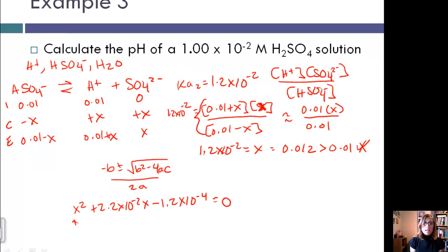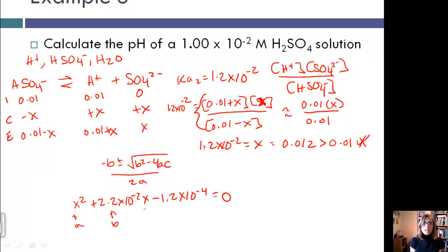You have your a, you have your b, and you have your c. You can plug in and get an x value of 4.5 times 10 to the negative 3.